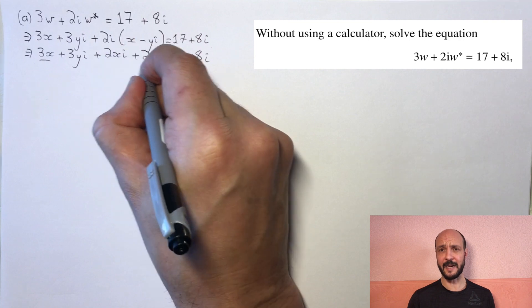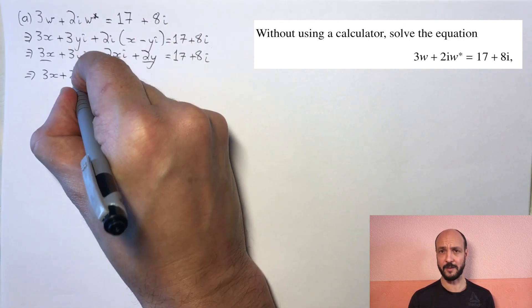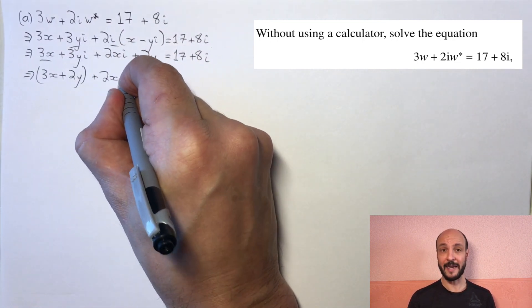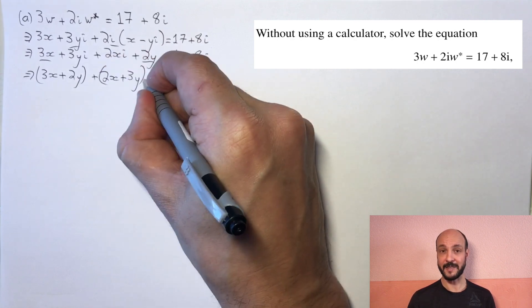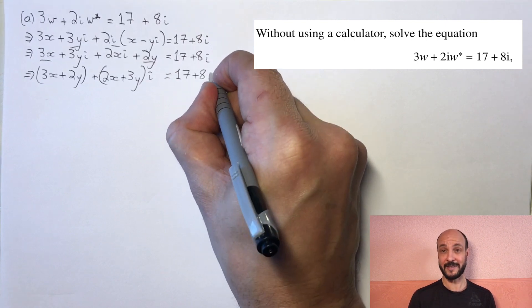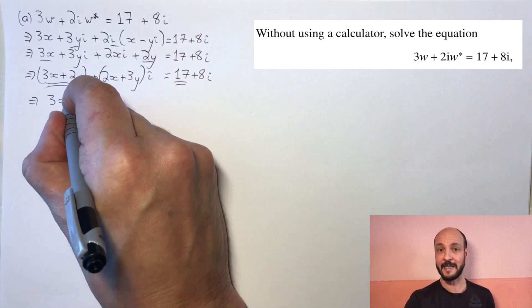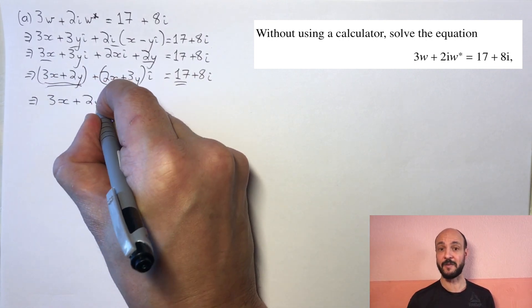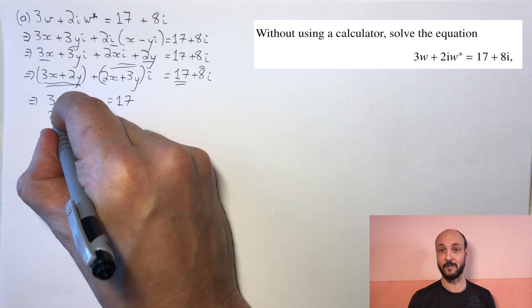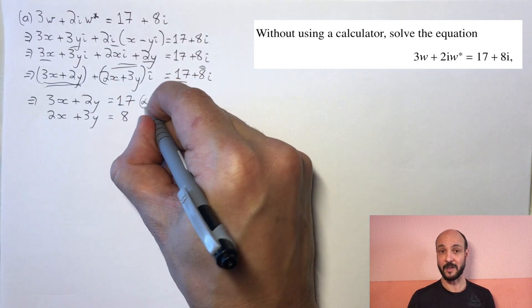And then if we put all our imaginary parts together, so we can compare them on both sides of our equation, we've got 3x plus 2y plus, in brackets, 2x plus 3y times by i is equal to 17 plus 8i. Now, this will give us a system of equations, or a set of simultaneous equations, where the real part on the left is compared with the real part on the right, and the imaginary part on the left is compared with the imaginary part on the right. So 3x plus 2y equals 17, we'll call that equation alpha, and 2x plus 3y equals 8, we can call that equation beta.